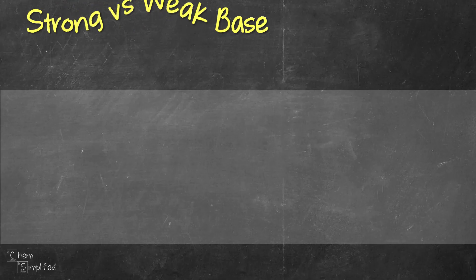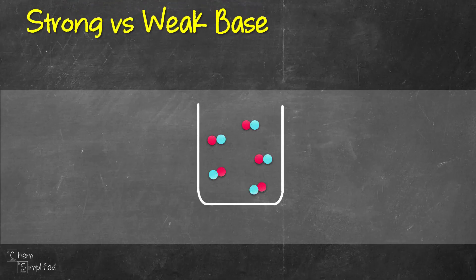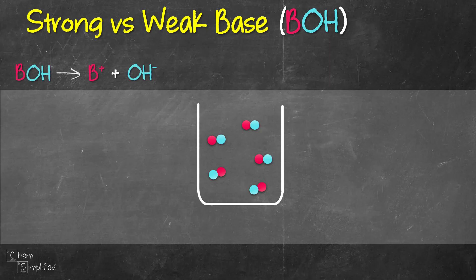The difference between a strong and a weak base lies in how much the ions in the base split apart. From the Arrhenius theory, a base consists of BOH. When placed in water it will dissociate — a fancy word for separating into ions. So the base dissociates into positive and negative ions: B+ and OH-. B+ is the metal cation and OH- is the hydroxide anion.